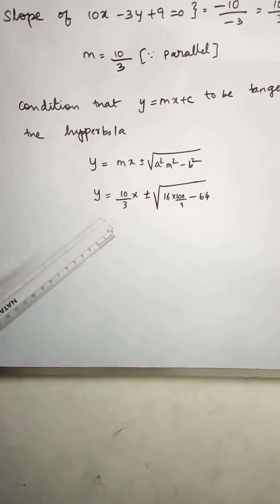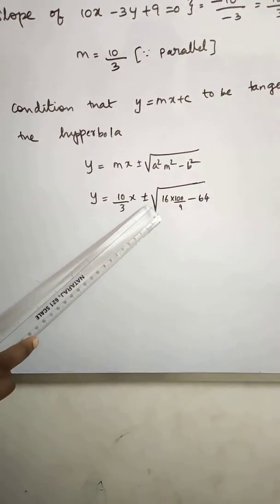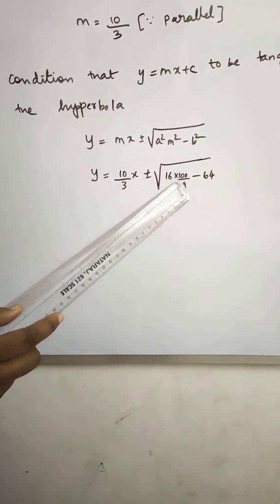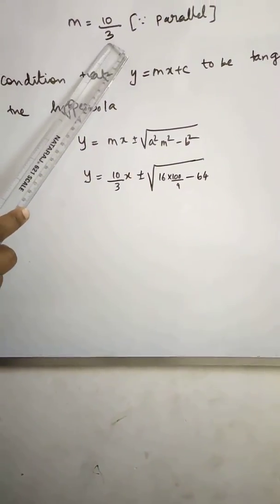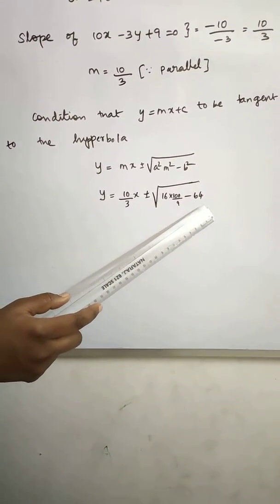Substituting m value, a² and b². So y is equal to 10 by 3 x plus or minus square root of 16 into m², so 16 into 100 by 9 minus 64.